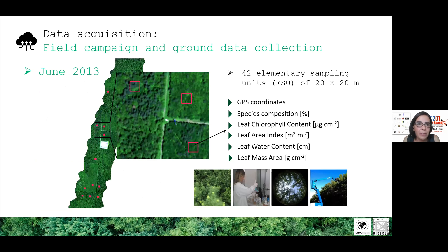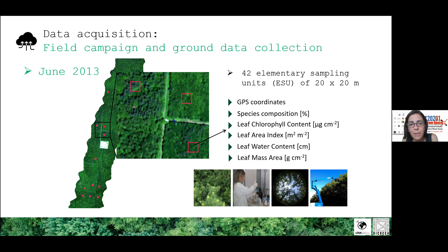Together with the airborne overpass, we also collected field measurements. In particular, we estimated species composition and sampled leaves from the main dominant species to obtain validation data for leaf chlorophyll content, leaf water content, and leaf mass area. We also measured the leaf area index through hemispherical photography.